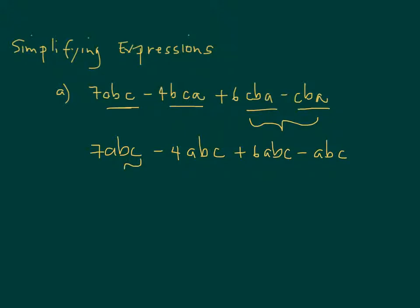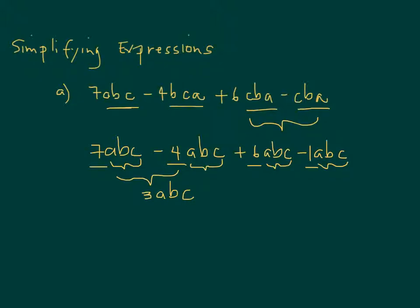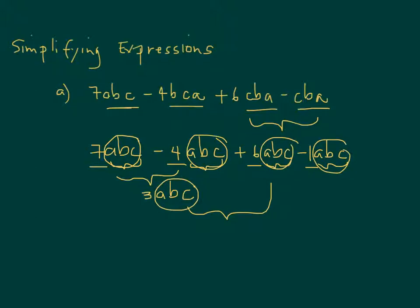ABC is like a label of the expression. You have seven minus four plus six minus one — there's a one here. Seven minus four is three, so this becomes three ABC. Then three ABC plus six ABC — just think of ABC as a single object, it will always be ABC. So now we have three ABC and then plus six ABC.